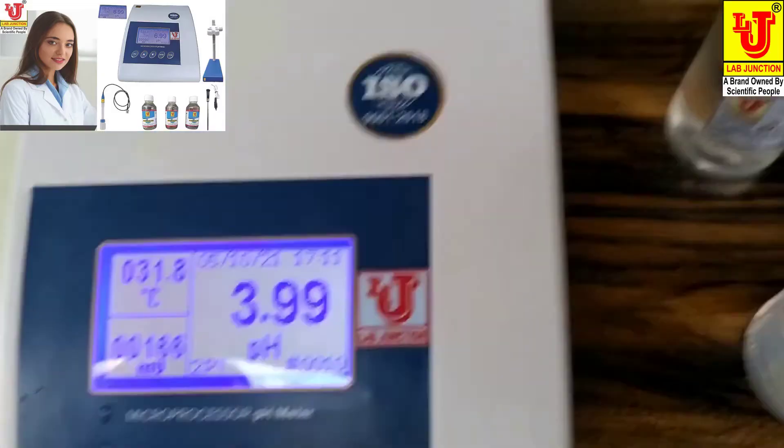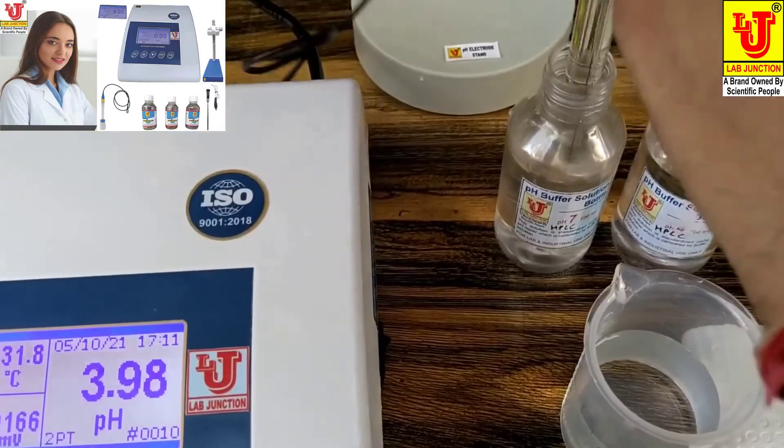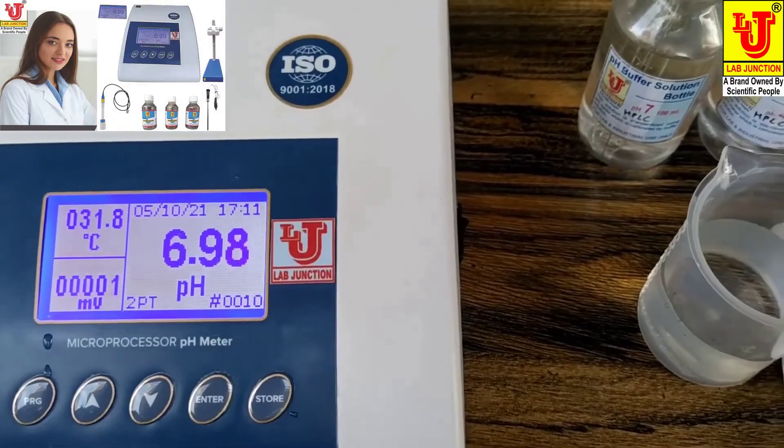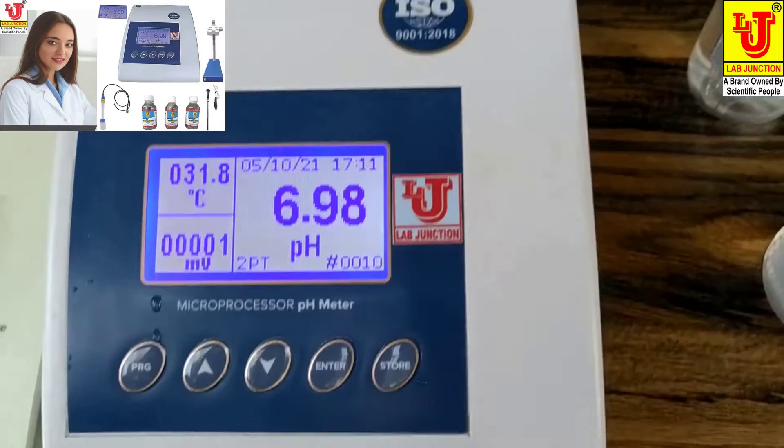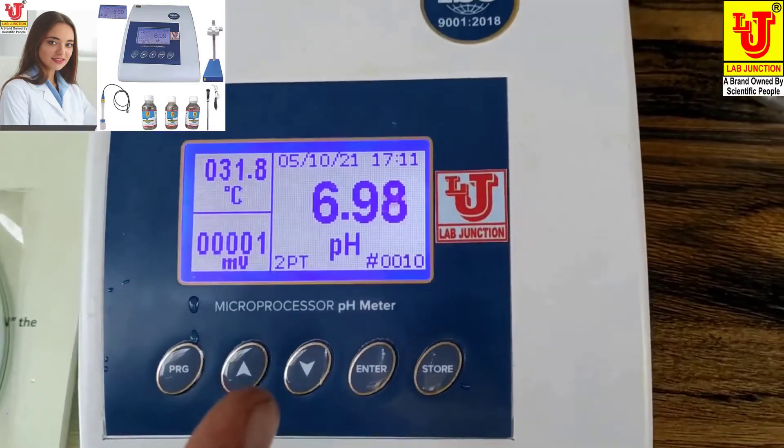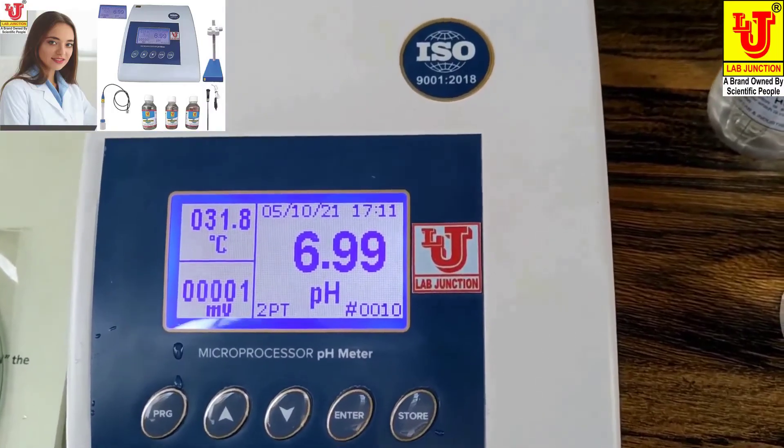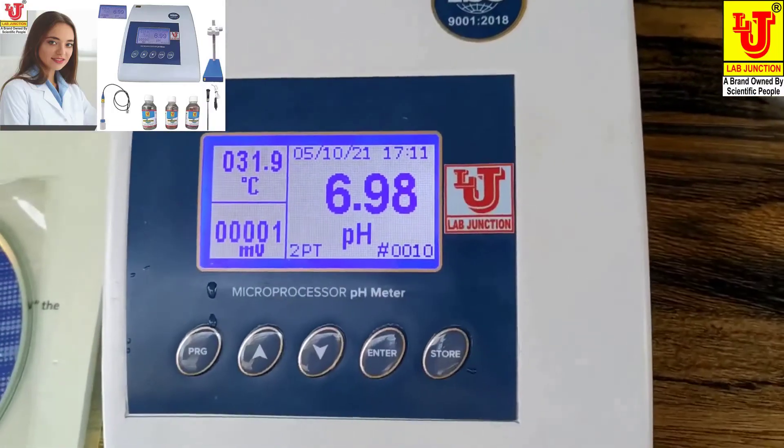Now go to main menu. 3.99 for 4 pH. For 7 pH, this is the final value of 7 pH, 6.99. This is a very simple microprocessor pH meter.